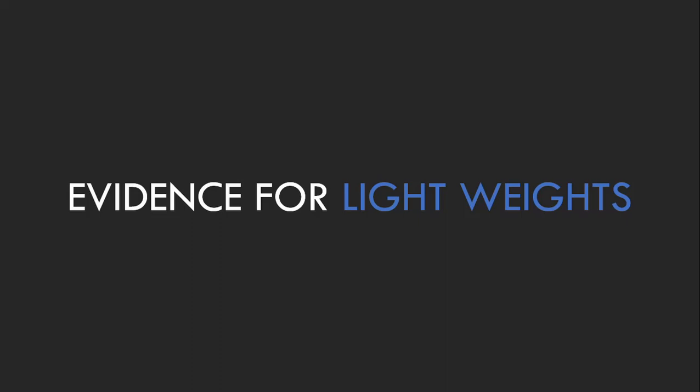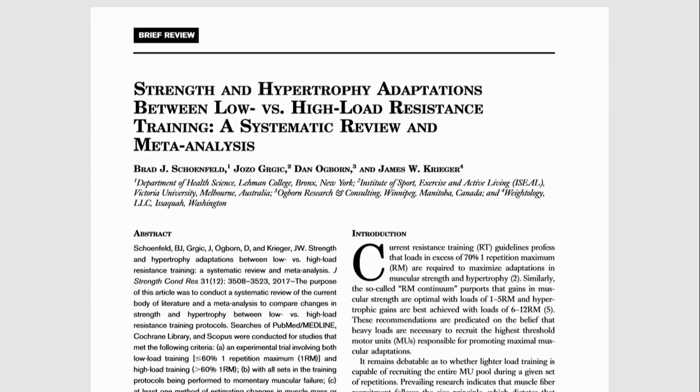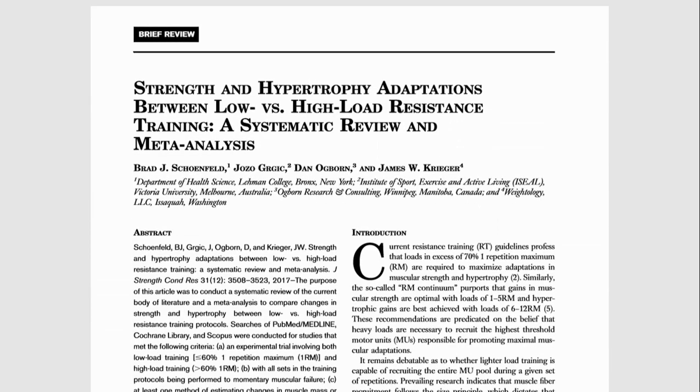It is a common conception that lifting weights in the 6 to 12 rep range is the sweet spot for hypertrophy training, and that loads used in a higher rep range simply induce muscle endurance adaptations. However, this meta-analysis published in 2017 gave conclusive evidence against this idea.